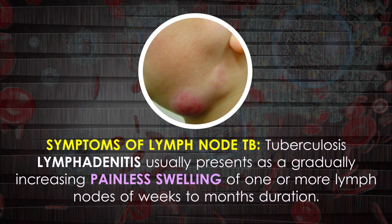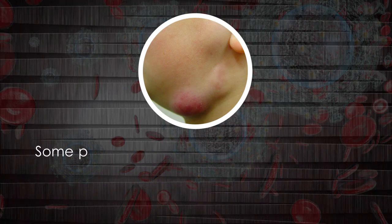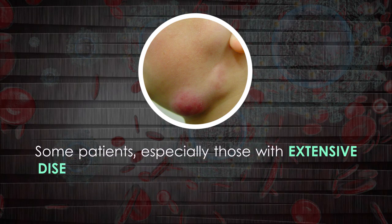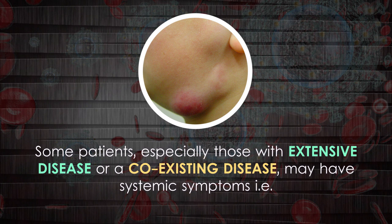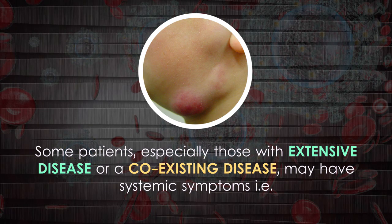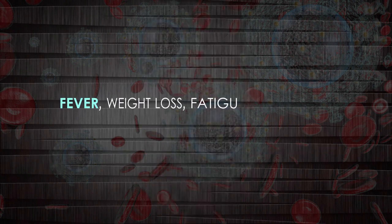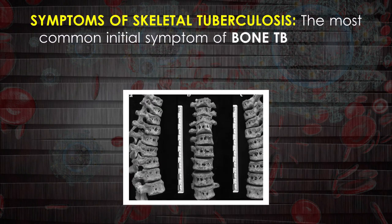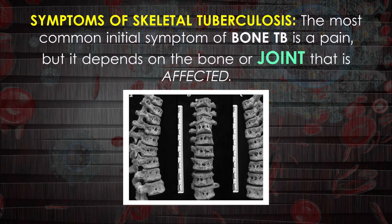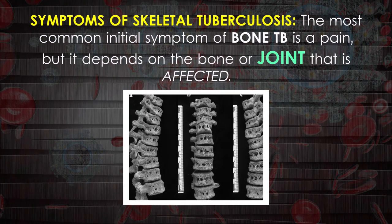Tuberculosis lymphadenitis usually presents as a gradually increasing, painless swelling of one or more lymph nodes over weeks to months. Some patients, especially those with extensive or coexisting disease, may have systemic symptoms such as fever, weight loss, fatigue, and night sweats.